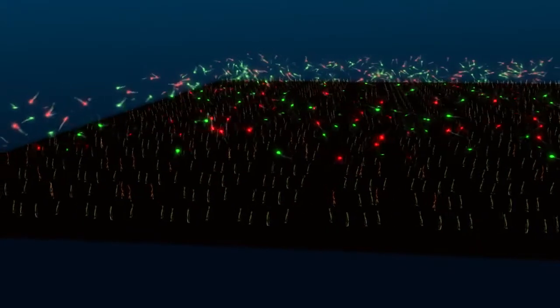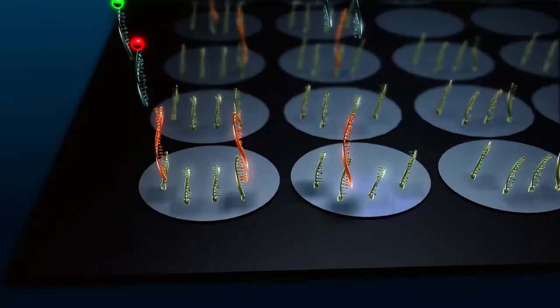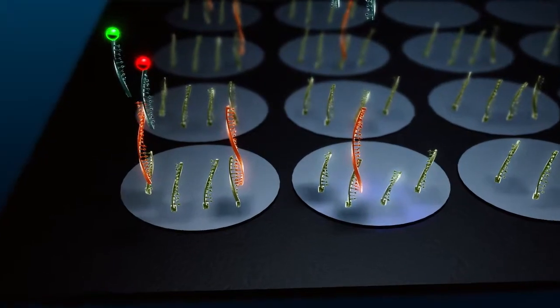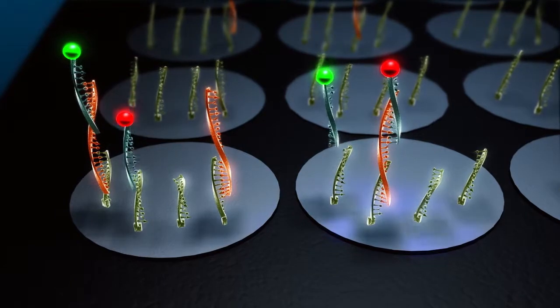Finally, fluorescent probes of different colors are hybridized to the target sequence, indicating the presence of a specific DNA signature in the sample.